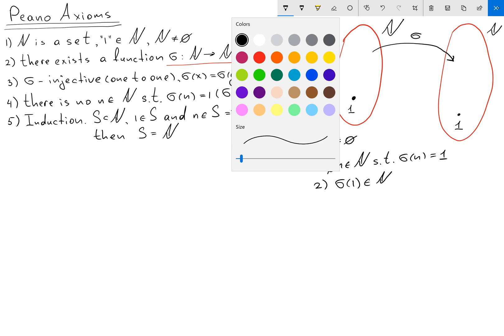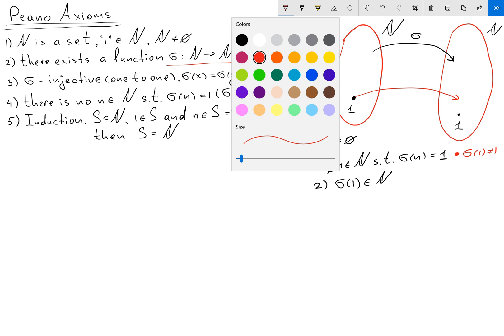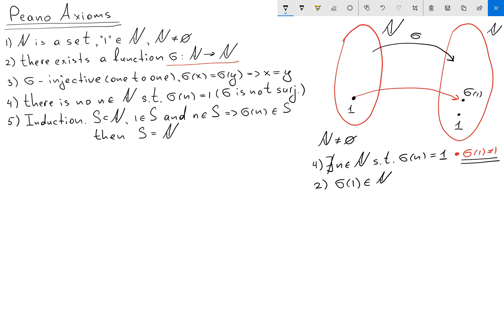So let's consider this element 1. Sigma of 1 means I'm going to map this element here. But because of my fourth axiom, I can see that sigma of 1 doesn't equal 1.